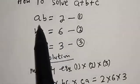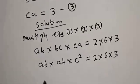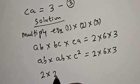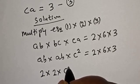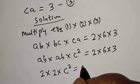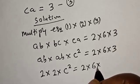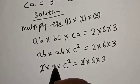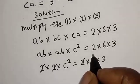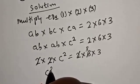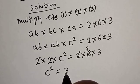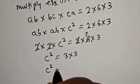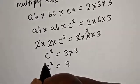From equation 1, ab is equal to 2, so let's substitute. We have 2 multiplied by 2 multiplied by c squared is equal to 2 times 6 times 3. Simplifying both sides, c squared is equal to 9.